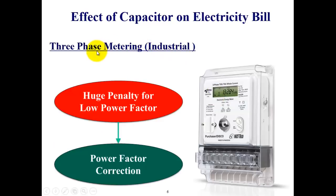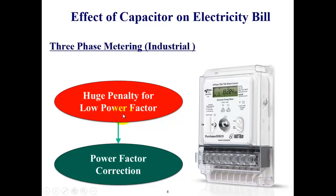Now let's talk about industrial tariff. In industries, we deal with hundreds of thousands of amperes. If the power factor is very low, the industry draws hundreds of extra amperes from the utility, which limits the capacity of distribution equipment. That is why the service provider imposes huge penalties if the power factor falls below the recommended value. To avoid this, capacitors are installed across the supply — this is called power factor correction. By improving the power factor, the consumer avoids penalties and is only charged for the energy they consume, so in industrial tariff, installing capacitors can definitely help reduce the electricity bill.